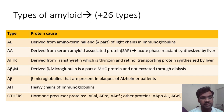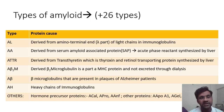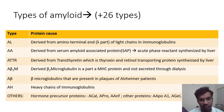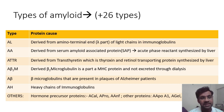A-beta-2-M amyloid is derived from beta-2 microglobulin, which is part of the MHC protein, and is most commonly seen in patients on dialysis. Amyloid beta is derived from beta-microglobulins present in plaques of Alzheimer's patients.